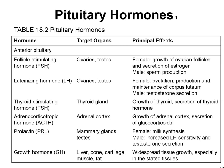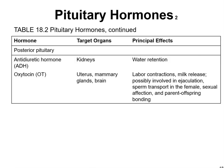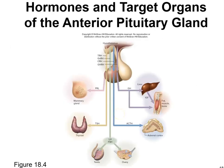Growth hormone promotes widespread tissue growth especially in the stated tissues. Antidiuretic hormone (ADH) targets the kidneys for water retention. Oxytocin, found in the uterus and mammary glands and the brain, has principal effects including labor contractions, milk release, possible involvement in ejaculation and sperm transport, and parent-offspring bonding. The anterior pituitary hormones — prolactin, thyroid-stimulating hormone, luteinizing hormone, follicle-stimulating hormone, corticotropin, and growth hormone — all affect their respective target organs.